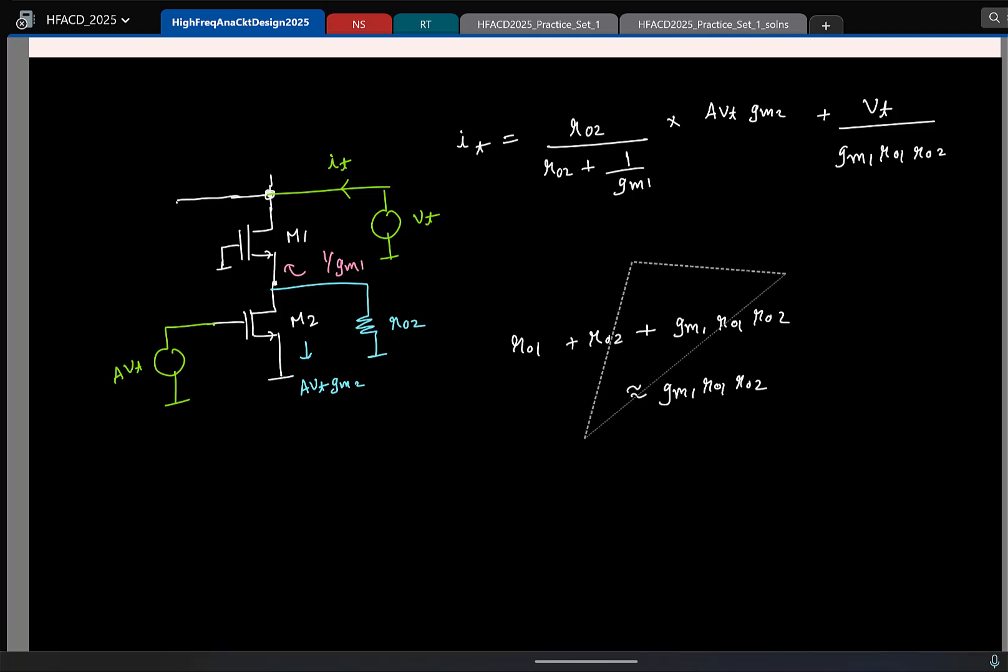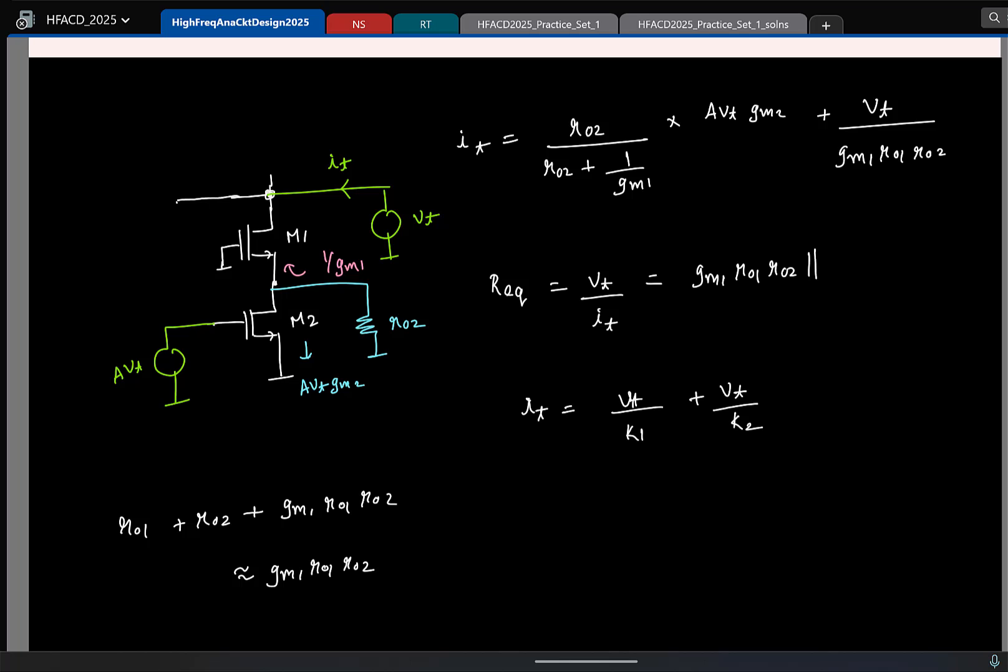So this way, without drawing any equivalent circuit, you should be able to ideally write it. So what is the equivalent resistance now? Can you tell me? Vt by it. I have two components. I mean, I find that I test is some Vtest by some K1, plus Vtest by some K2. So what is the equivalent resistance? K1 in parallel with K2. So what are the two components here? What is the resistance due to this part? GM1 R naught 1 R naught 2, in parallel with what is the contribution from this term? Remember I should take the Vt by whatever is there. So that will be 1 by A times GM2 times R naught 2 by this.